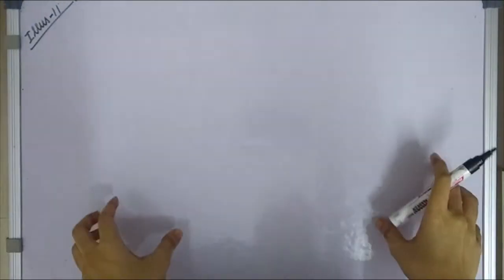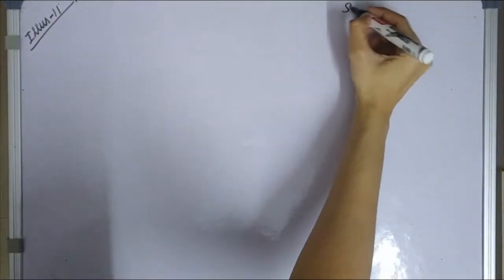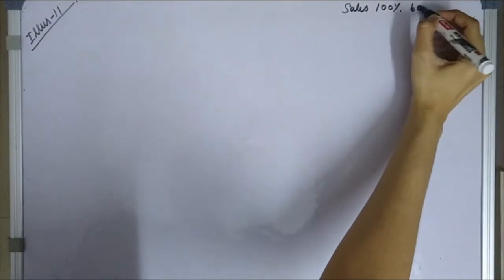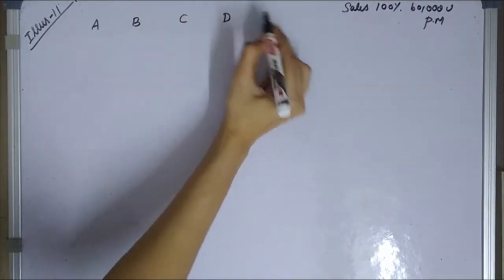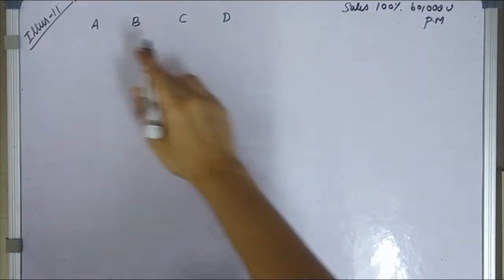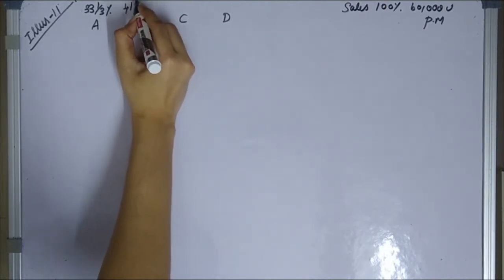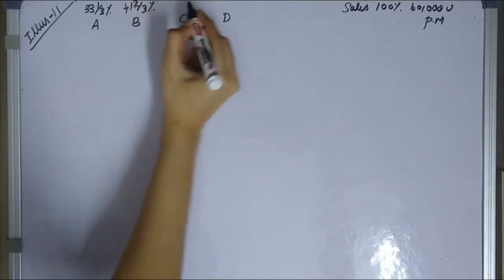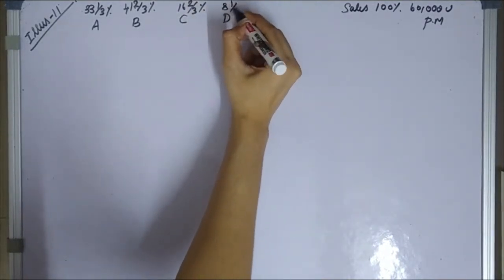Now for Illustration 11, when sales come in value, we can get the units for total budgeted sales of 60,000 per month. The sales mix percentages are: 33 and 1/3% for A, 41 and 2/3% for B, 16 and 2/3% for C, and 8 and 1/3% for D.